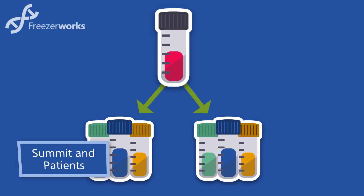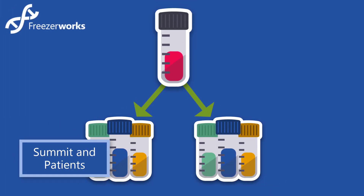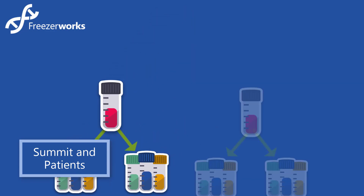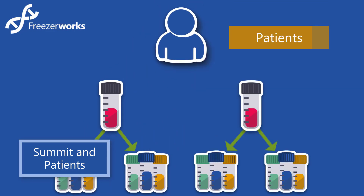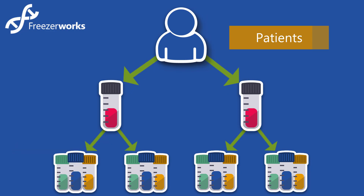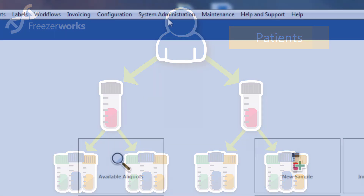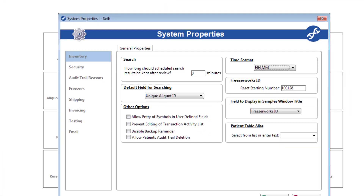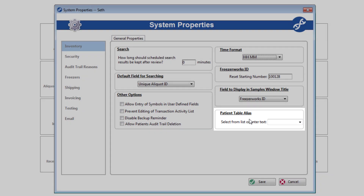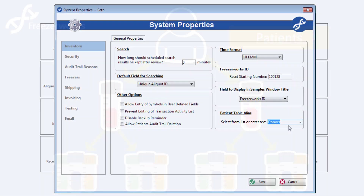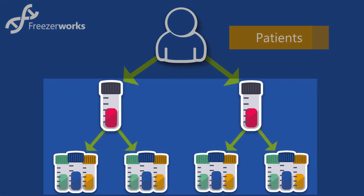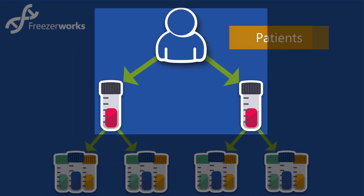Now, if you are using the Summit edition, an extra top layer is added to our relational hierarchy — the patients, or participants. Think of this layer as the source or origin of the samples in your database, metadata for the metadata. It's possible that you have an entirely different name for the patient level in your organization. If so, use the system properties option patient table alias to name it whatever you'd like. Just like aliquots are children to samples, so are samples children to patients.